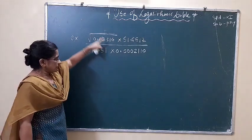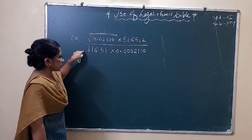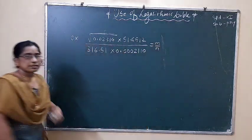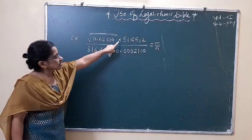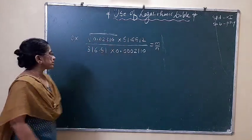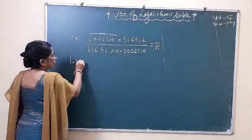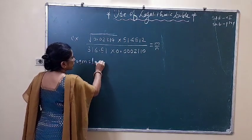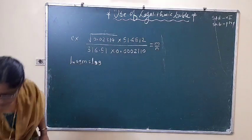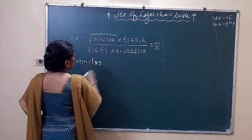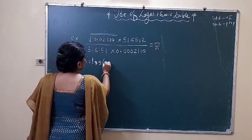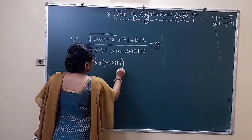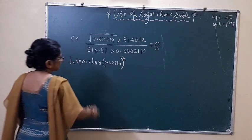A raised to n is called multiplication and division. This is in the form of n by n. First, find out log of y. Log of y is equal to log of a raised to n. Then, log of 0.02314 raised to one half, plus...